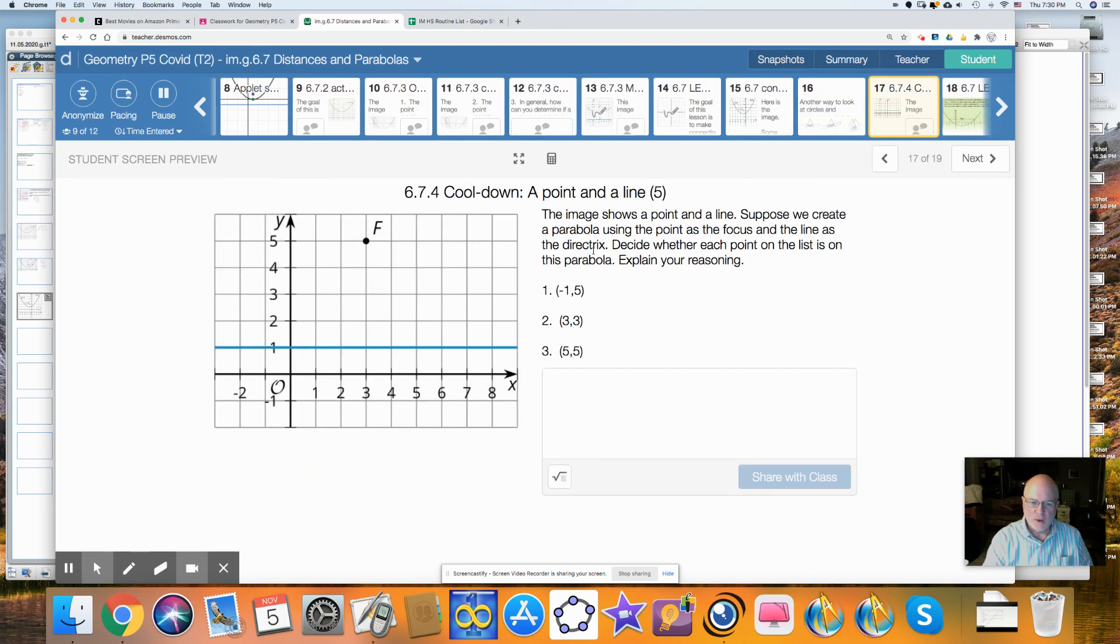Another way of looking at these, these are all conic sections. We're going to see what the relationship is tomorrow between a parabola and a circle. We look at the actual derivation of the formulas and what they mean. So for the cooldown, we had at this point, it shows a point and a line. I want to know if these points are equidistant from F and from the line. You'll find that 1 and 2 are, number 3 is not, as you work through them. So good luck.